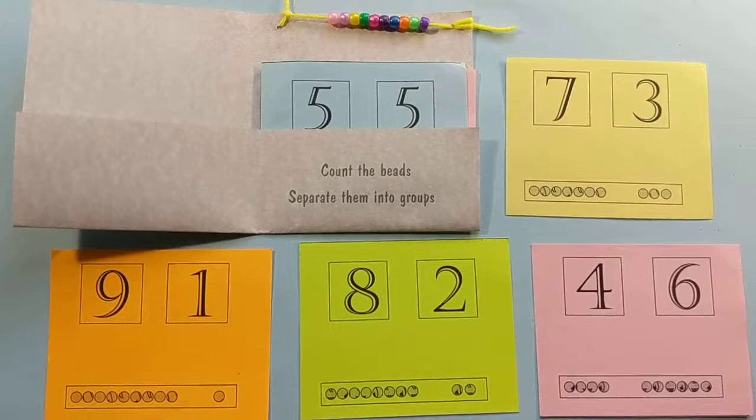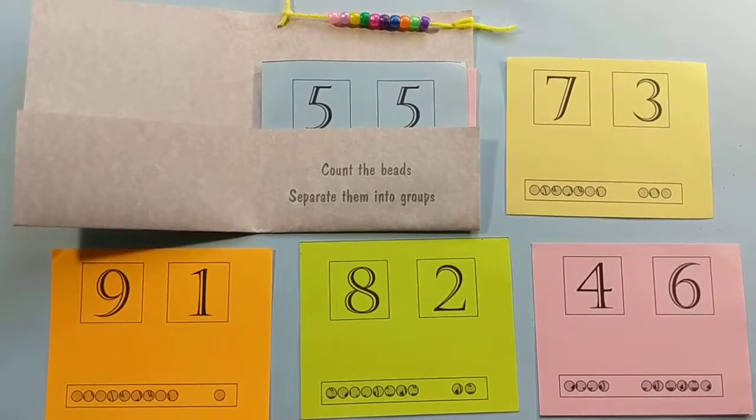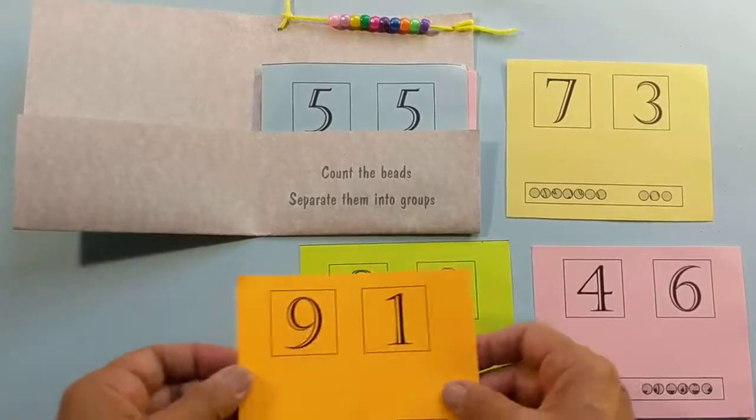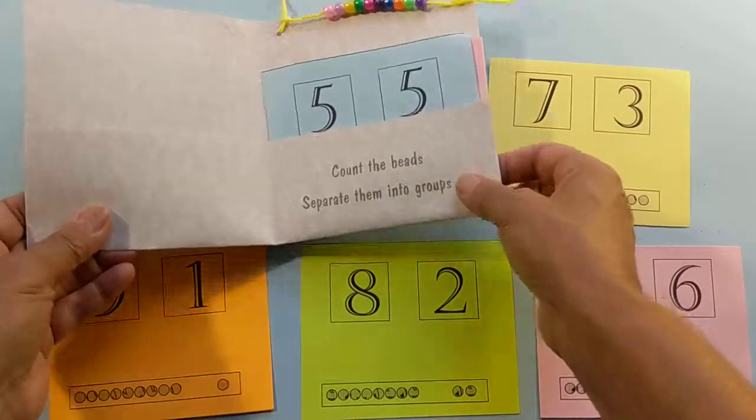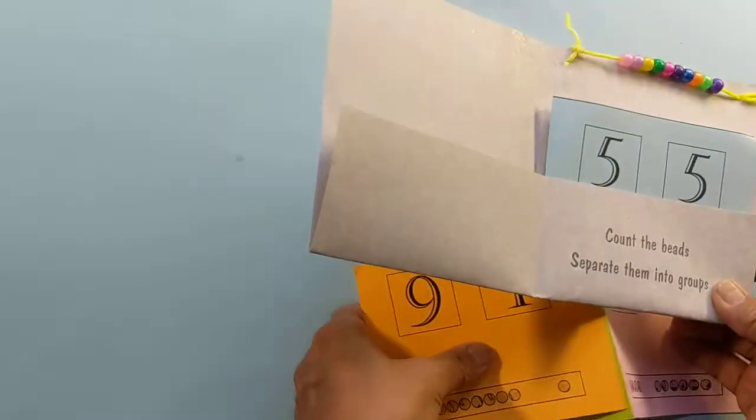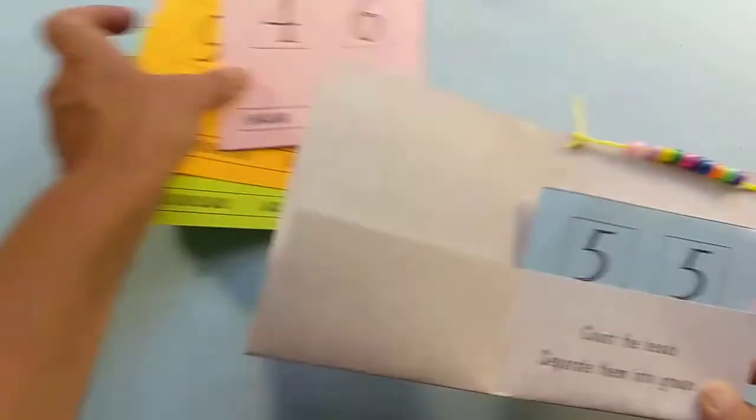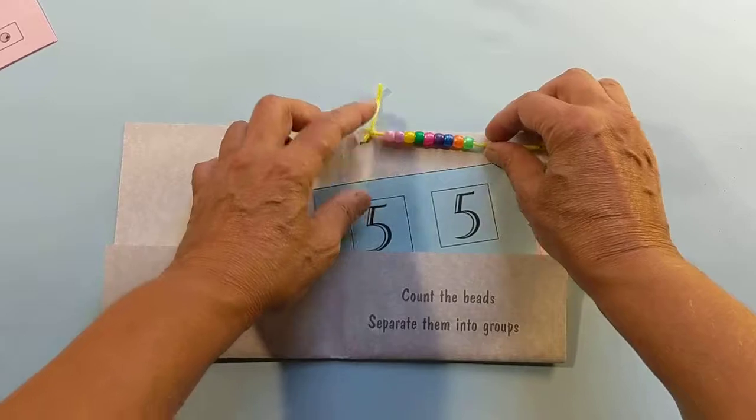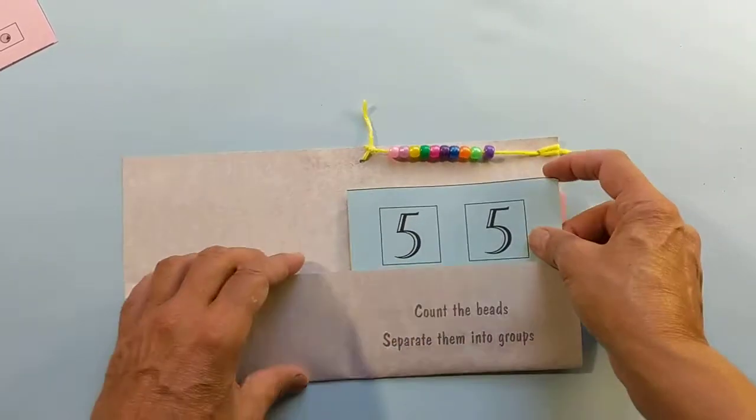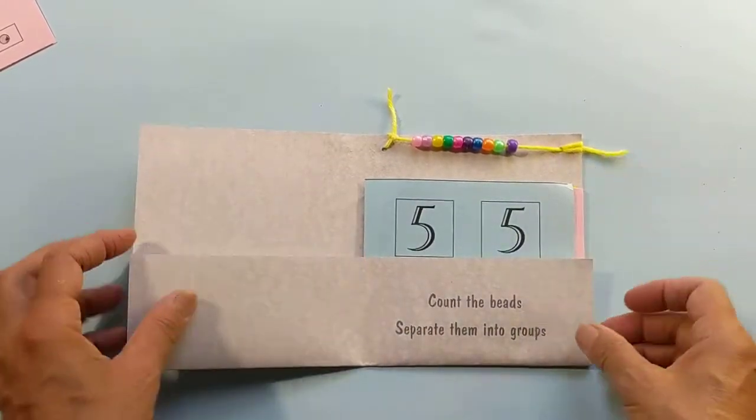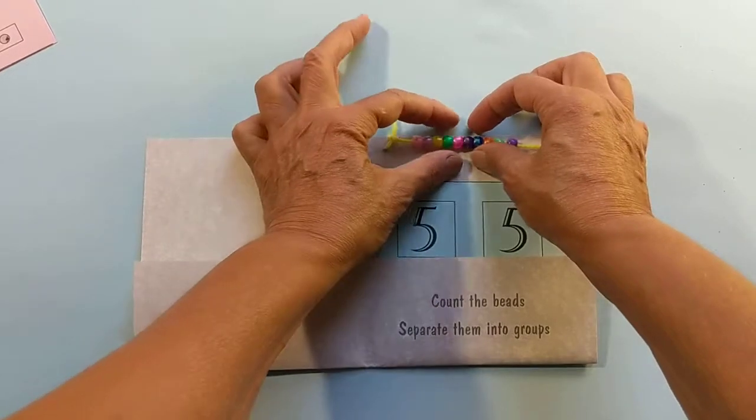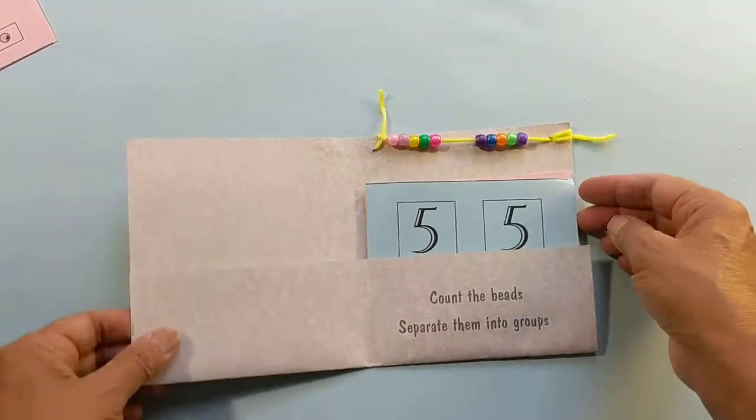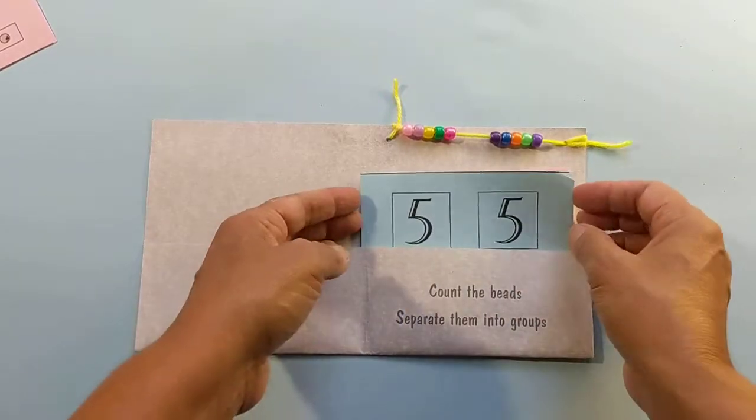I recently did this project with five-year-olds and it went so well I wanted to share in video form. It's a little pocket that has 10 beads on top and cards inside. The idea is to separate the 10 beads into groups, so in this case it's five and five.